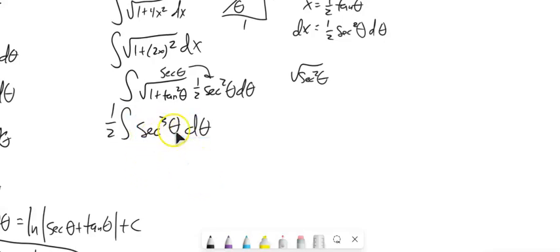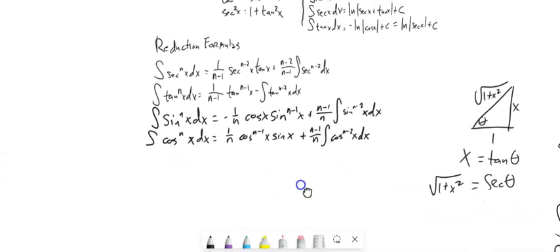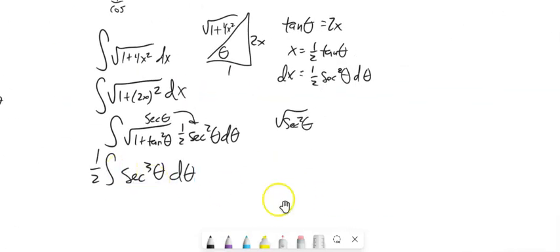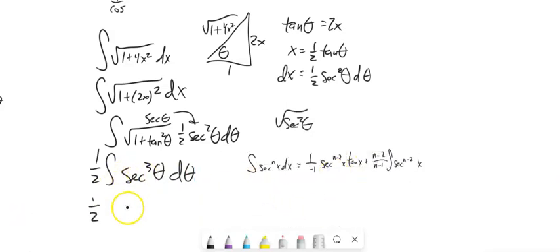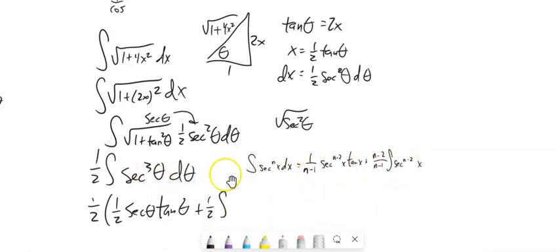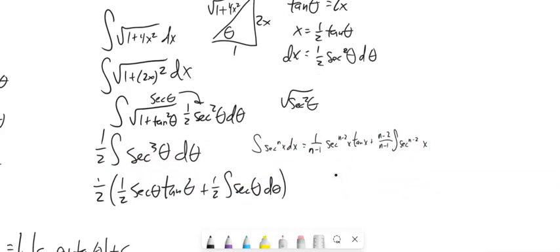I could break this up into (sec²θ - 1)·sec θ, but I'm going to show you something called a reduction formula and prove why it works. These are good things to have. The reduction formula for sec^n is: (1/(n-1)) sec^(n-2)θ tan θ + ((n-2)/(n-1)) ∫sec^(n-2)θ dθ. Let me pull this over and apply it. With sec³θ, n = 3, so this becomes (1/2) sec θ tan θ + (1/2) ∫sec θ dθ.